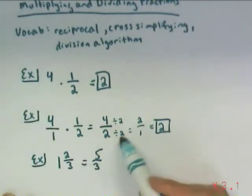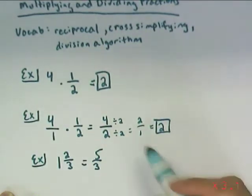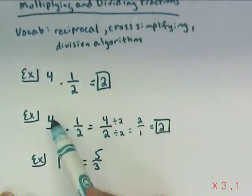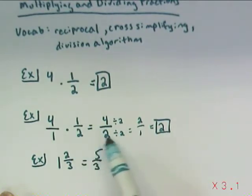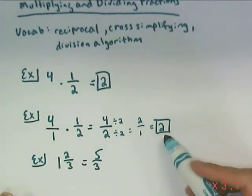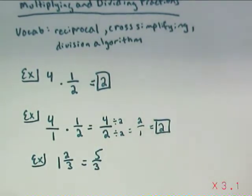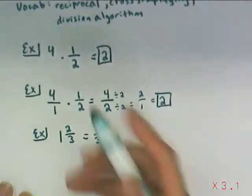So with multiplication, it's pretty easy because you just work across. You multiply the numerators, then you multiply the denominators, finally you simplify at the end. But cross-simplifying makes things even easier.